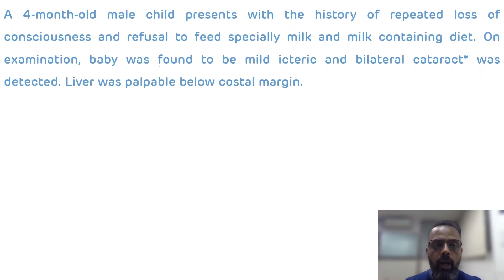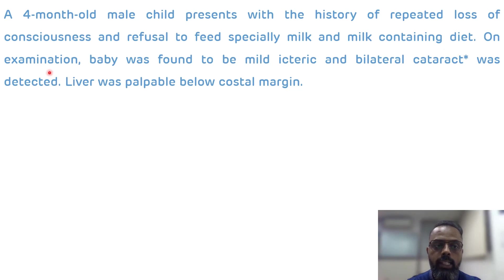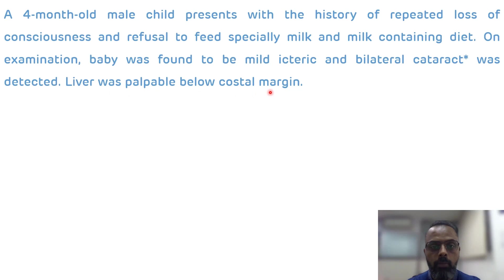The description part: a four-month-old male child presents with history of repeated loss of consciousness and refusal to feed, especially milk and milk-containing diet. On examination, the baby was found to be mildly icteric and bilateral cataract was detected. Liver was palpable below the costal margin.